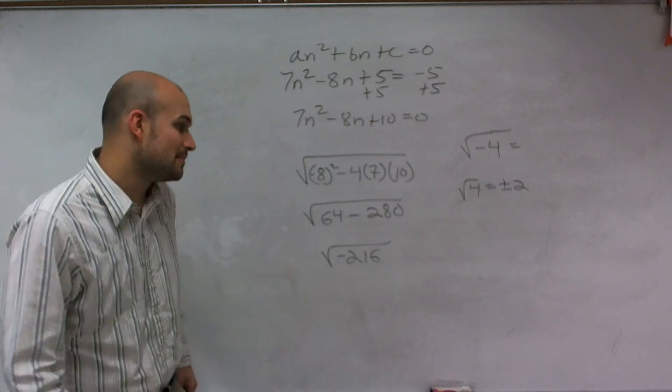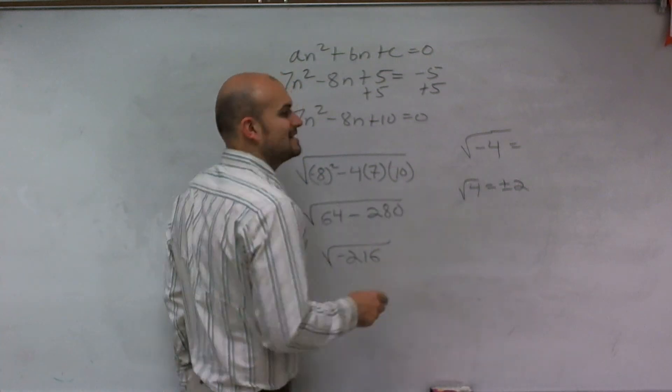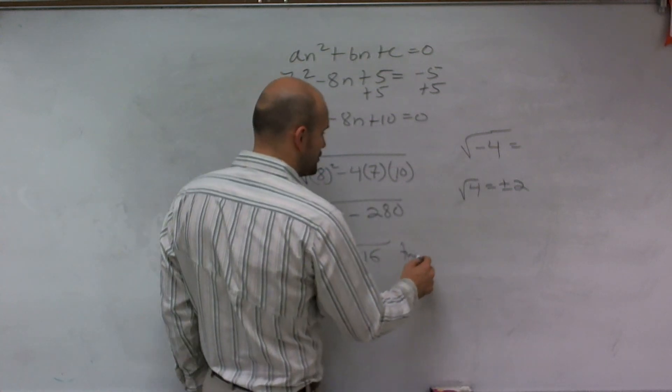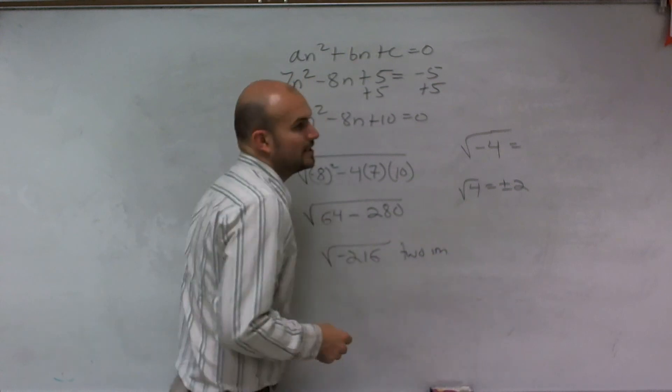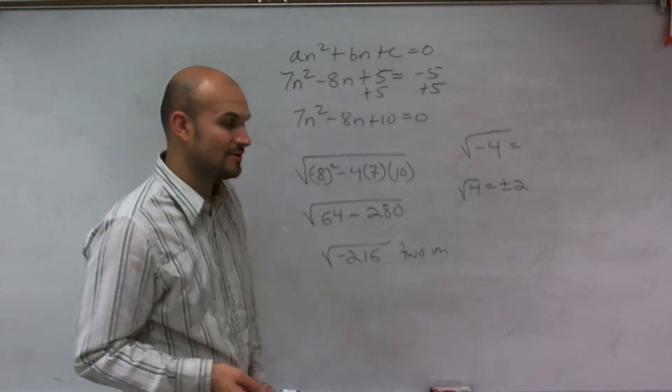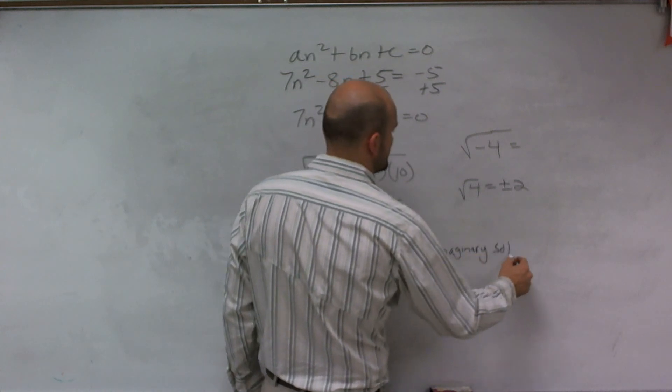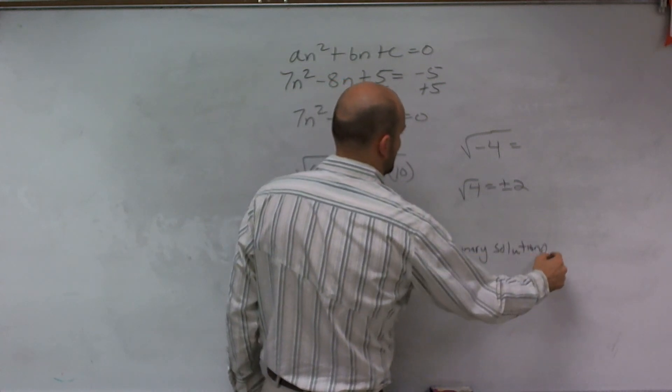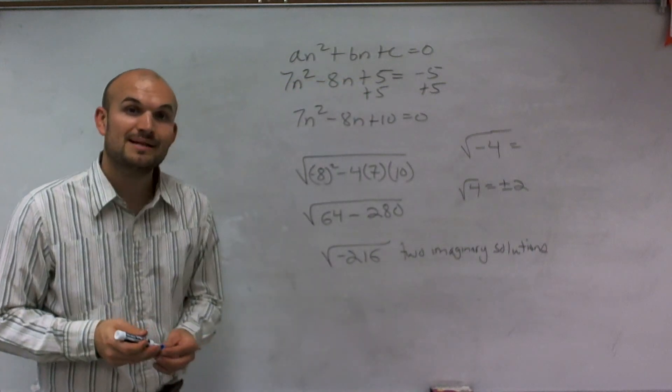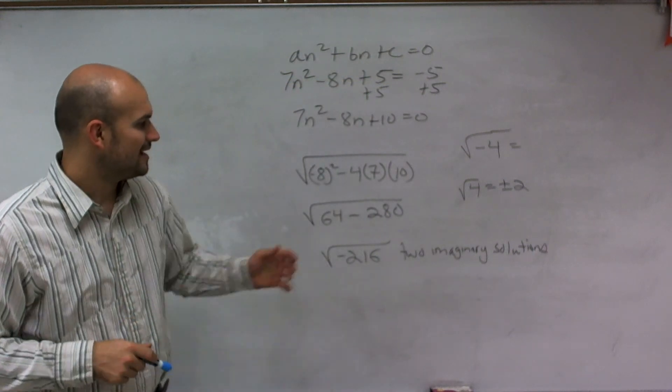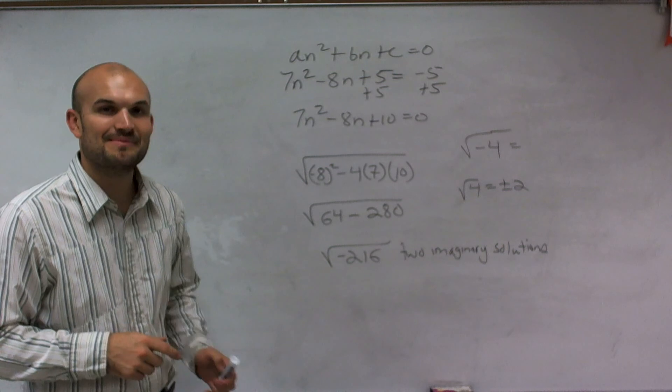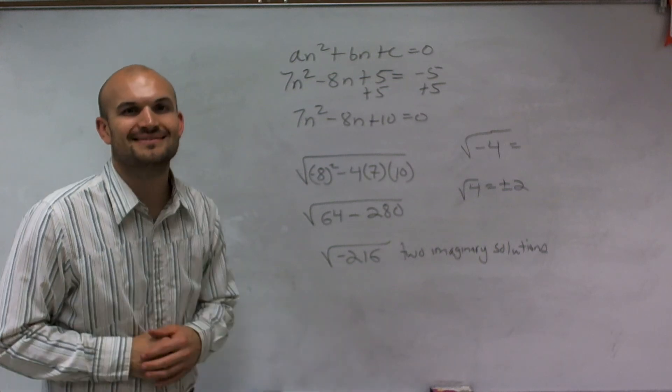But all I want to do is just say, well, if you've taken the square root of a negative number, first of all, you're always going to have a plus and a minus. So you're going to have two. But instead of being real or rational or irrational, you're going to have two imaginary solutions. And there you go, ladies and gentlemen. And that is how you find the discriminant of a quadratic. I hope you enjoyed. Thanks.